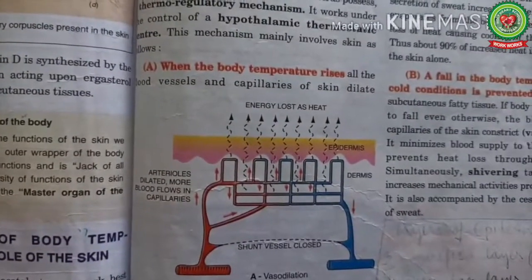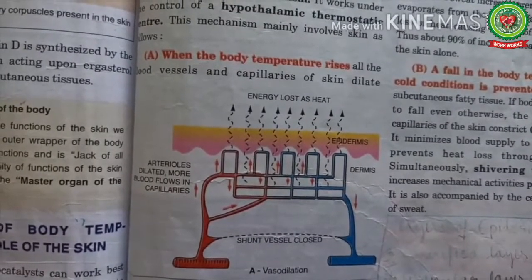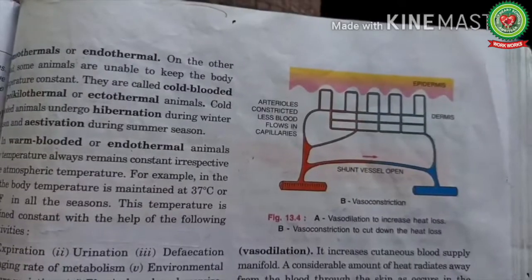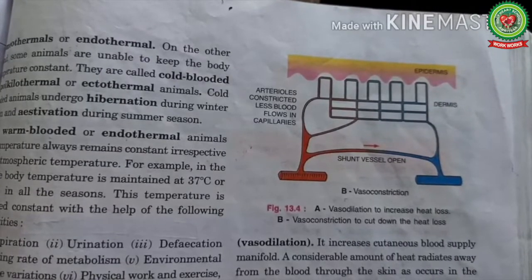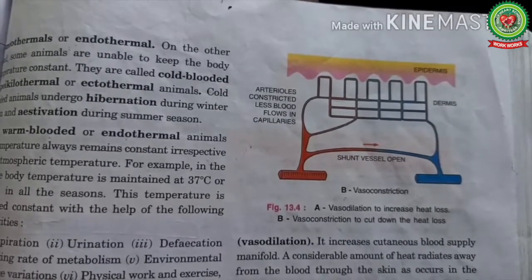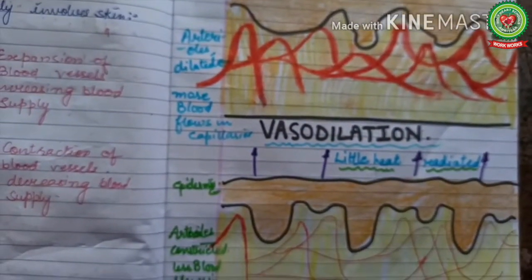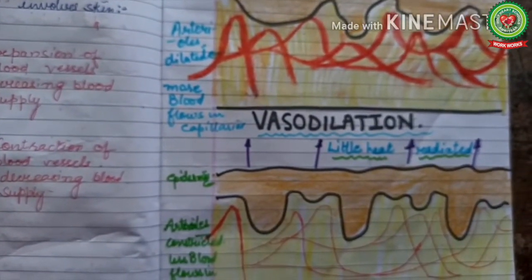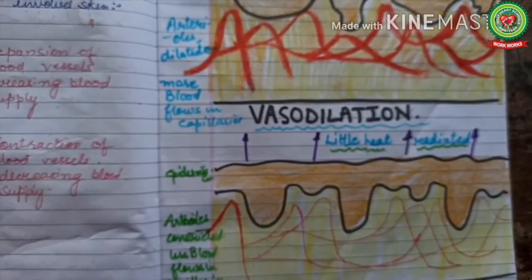The diagram at page number 13.7 shows the processes of vasodilation and vasoconstriction clearly. We have covered the concepts of vasodilation and vasoconstriction earlier. That was all about today's lecture. Kindly do all the question answers related to the topic, mark them in the book, and write reasoning questions, differences, and terms on your copies. Thank you so much.